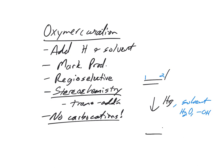You always add to the more substituted carbon. So if the solvent is water, the OH adds trans. The OH and H would be trans to each other. It's regioselective because it picks the more substituted carbon. The H that you added and the solvent — in this case water, so OH — are always trans to each other. And there are no carbocations, so don't worry about rearrangements.